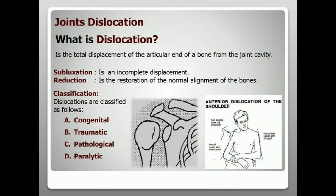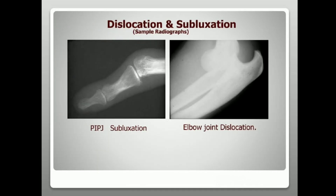Regarding joint dislocation: dislocation is the total displacement of the articular end of a bone from the joint cavity. Subluxation is an incomplete displacement, and reduction is the restoration of normal alignment of the bone. The classifications of dislocation are congenital, traumatic, pathological, and paralytic. Radiographs of subluxation and dislocation are shown in the diagrams.